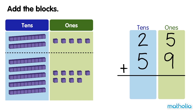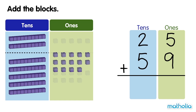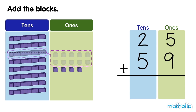5 ones plus 9 ones equals 14 ones. We can regroup 14 ones into 1 ten and 4 ones. We write the 4 ones in the ones column and the 1 ten in the tens column.